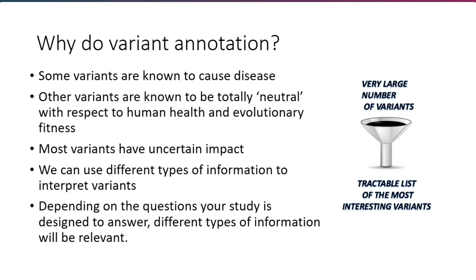The idea of variant annotation is that regardless of whether you have case or control cohorts to do analysis, you can still find out a lot about a variant you're interested in. Depending on the questions your study is designed to answer, you may be interested in different types of information, which is why we want variant annotation to be as flexible as possible. This funnel figure gives the general idea: using fast, modern variant annotation tools, you can work through a huge number of variants and come up with a tractable list of the most interesting ones for your study.